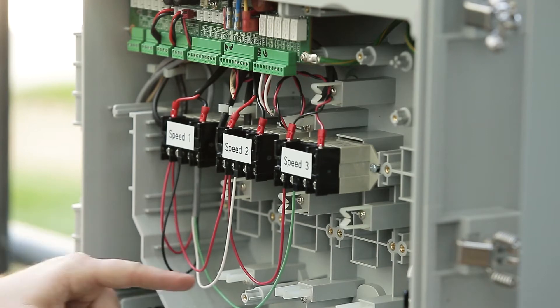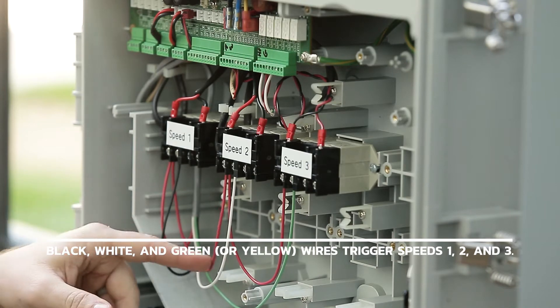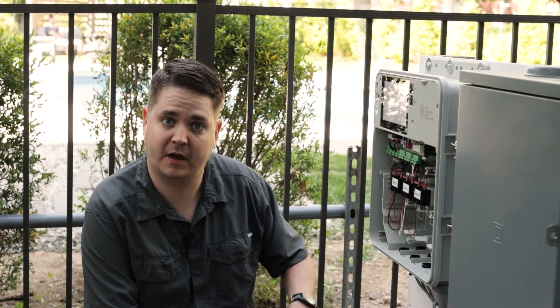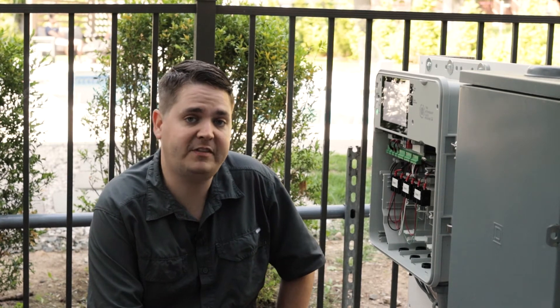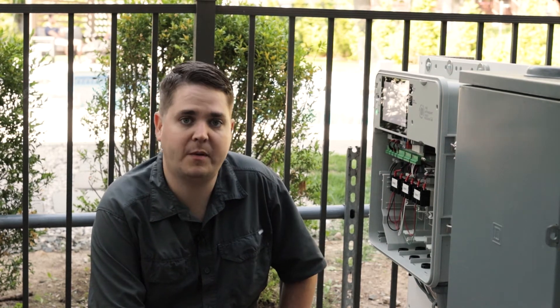But what these do is they connect to the three different terminals on the back of the pump to trigger speeds 1, 2, and 3 on the pump itself. So what we do is we set the speed for speeds 1, 2, and 3 on the program settings of the pump.